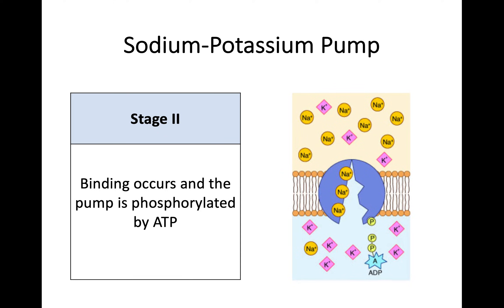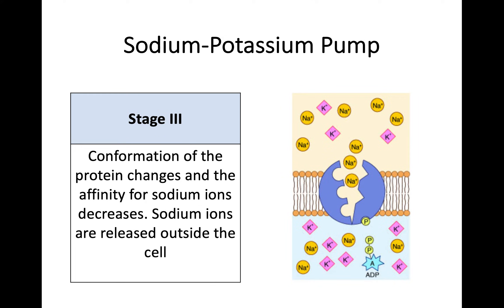Those sodium ions bind, and then the pump is phosphorylated by ATP, providing energy. The conformation of the protein then changes. This conformational change causes the affinity for the sodium ions to decrease, which means those sodium ions are released — they've now been transported and released outside the cell due to the conformational change and that change in affinity.